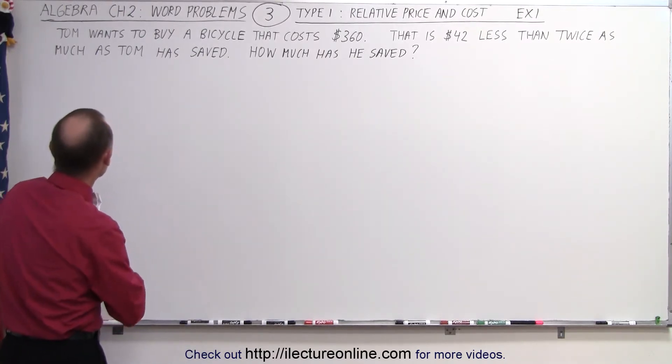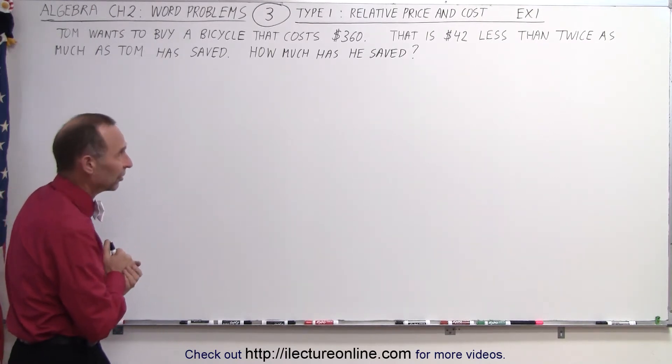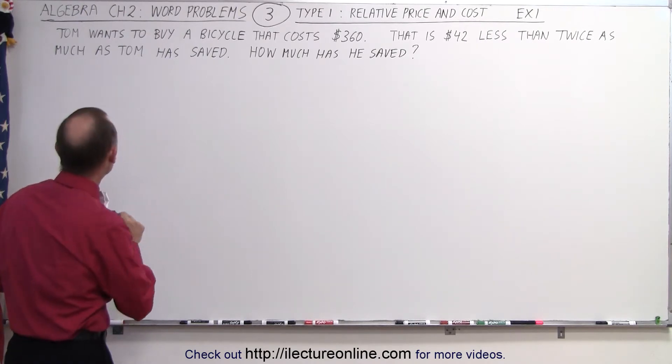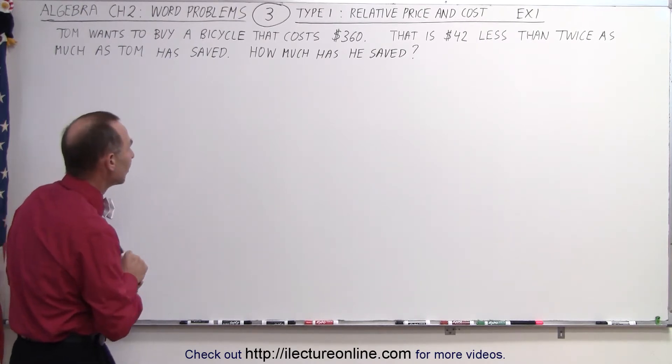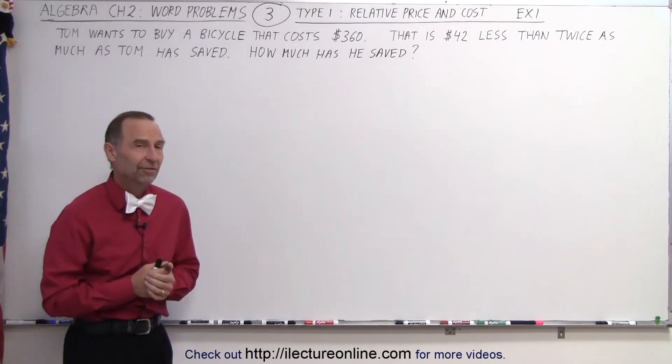The problem reads as follows. Tom wants to buy a bicycle that costs $360 that is $42 less than twice as much as Tom has saved. How much has he saved?